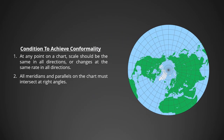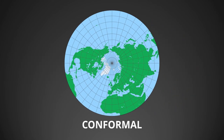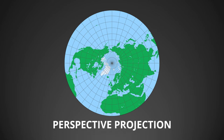Since the scale expands at a constant rate and all parallels and meridians intersect at right angles, azimuthal projection is conformal. No mathematical adjustment is required to fix the chart, thus making polar stereographic chart a true perspective projection.